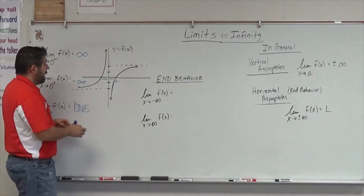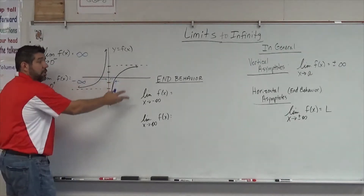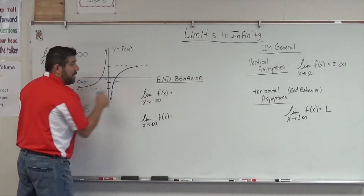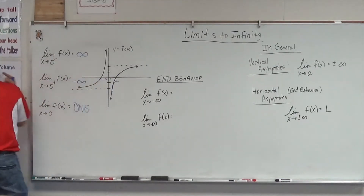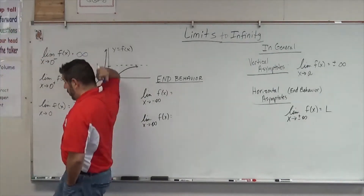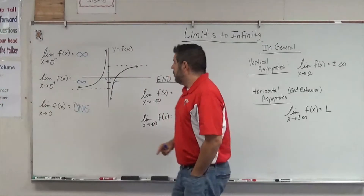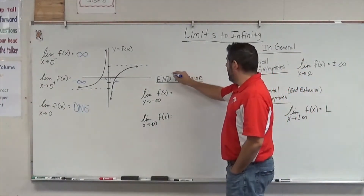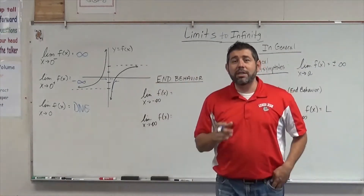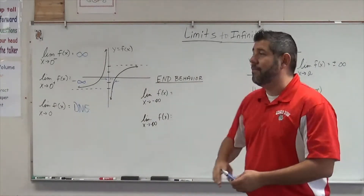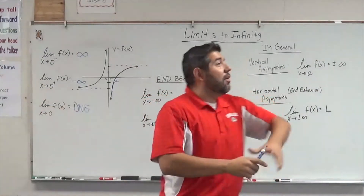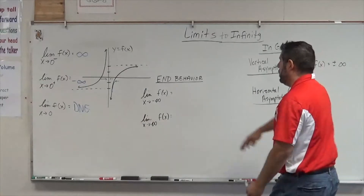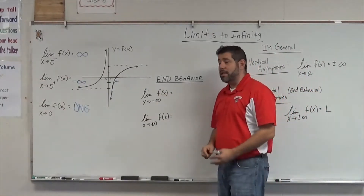So what about as x is going out to infinity or negative infinity? What is the limit as x goes to negative infinity? As x gets larger and larger in the negative direction and goes all the way out that way, what is y getting closer and closer to? We call this end behavior — what is happening at the ends of the graph, all the way out in either direction. We can use limit notation to express this.